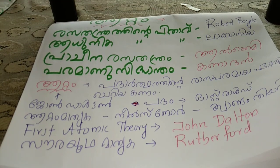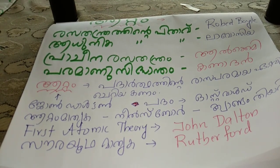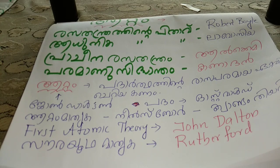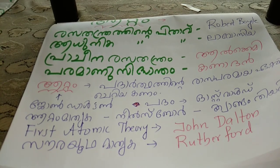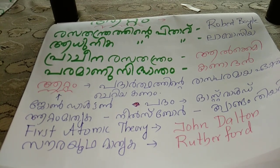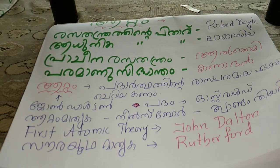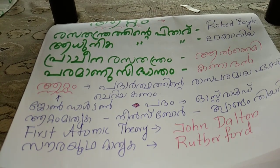It is called Prajina Resa Thandram. Paramanu Siddhantam. The Paramanu Siddhantam is also known as Kanadhanam. This covers 4 key points.